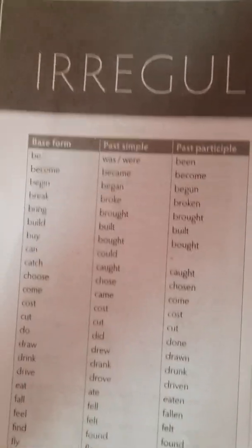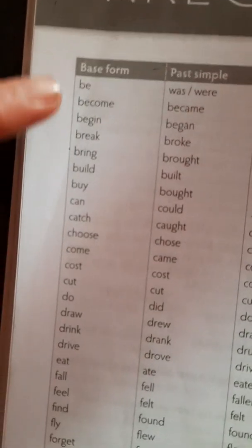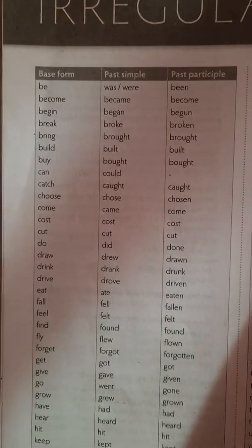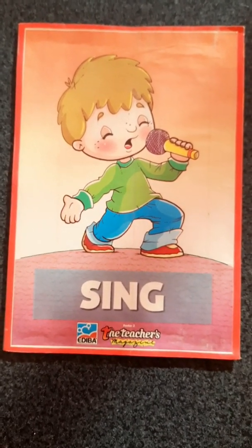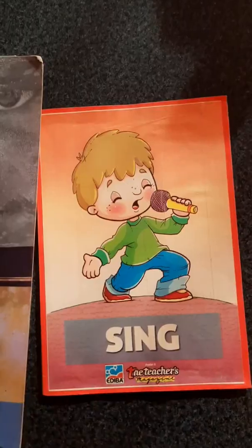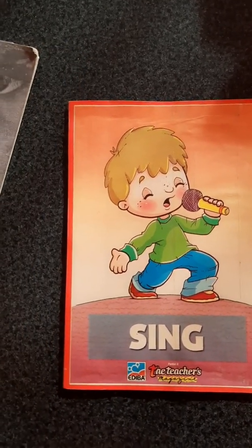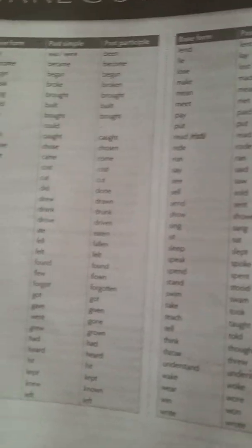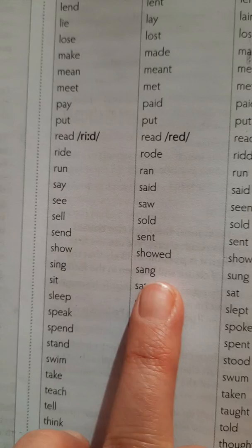In your workbooks, there is a list of irregular verbs at the very end. You will find the first part is the infinitive, and the second is the past form. For example, one irregular verb is 'sing.' We open the workbook at the very end and look for the word. Here we have 'sing,' and the past of 'sing' is 'sang.'